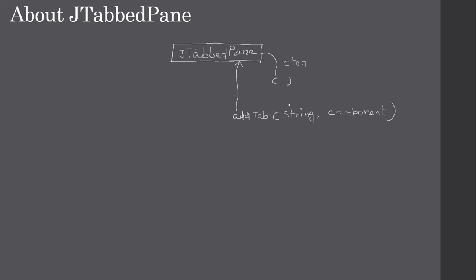Once the JTabbedPane is constructed, you can make a call to the addTab method. For the addTab method you can pass a string — for example, a tab name like 'memo' — and then pass the required component. If you pass a text area as a component, that will be the content of that tab. If you want to show multiple controls in a single tab, you can pass a JPanel or AWT Panel with multiple controls. You can call addTab multiple times; if called three times with different components, your JTabbedPane will show three tabs.